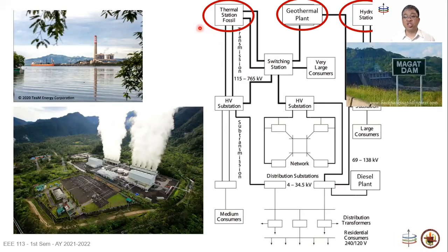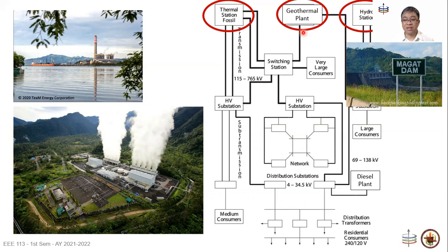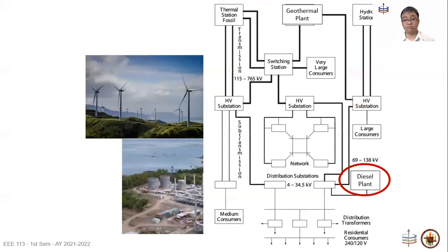The first important components are the large generators, which you learned in Week 1. Shown here are example large generators in the Philippines. On the left is a thermal station similar to what we have in Sual, Pangasinan — a coal power plant. In the middle is a geothermal power plant similar to those in Mak-Ban in Laguna and Batangas. We also have hydroelectric power plants in the Philippines, such as Magat Dam, located in Cagayan in northern Luzon. We can also have smaller power plants closer to load centers, such as windmills in Tila, Rizal or a diesel plant by Laguna Lake, which are close to Metro Manila.